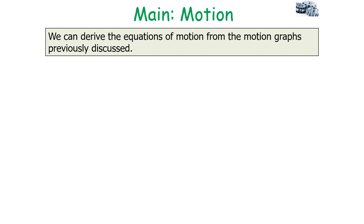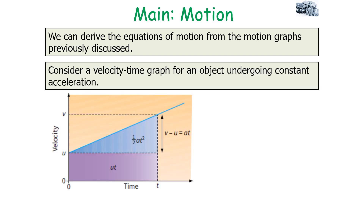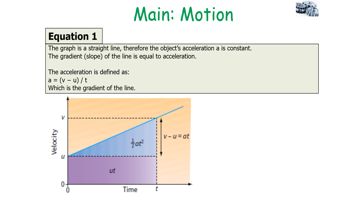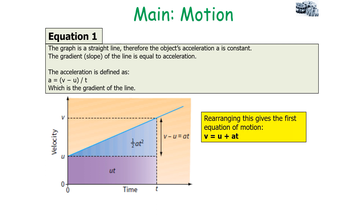We can derive the equations of motion from motion graphs. If we consider a velocity-time graph for an object undergoing constant acceleration, the graph represents the motion of the object. Its initial velocity is U and after time T, its final velocity is V. The graph is a straight line, so the object's acceleration is constant. The gradient of the line equals acceleration, where acceleration equals the change in Y divided by the change in X, or (V minus U) divided by T. Rearranging this gives our first equation of motion: V = U + AT.